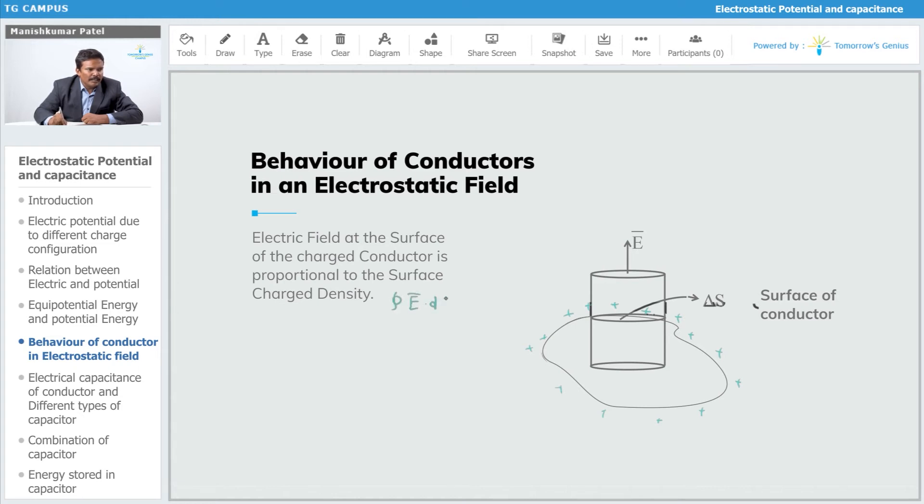Assume ds as ΔS. The electric field is uniform on this surface, so you can write it as E·ΔS = q/ε₀. Again, you can write that surface charge density equals charge upon total surface area.